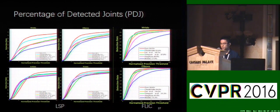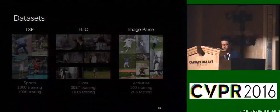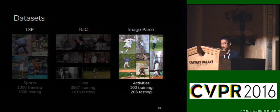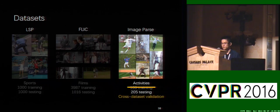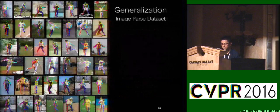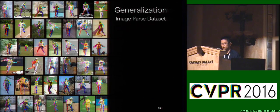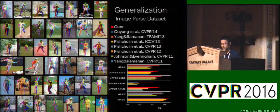We demonstrate the percentage of detected joints curve on both the LSP dataset and the FLIC dataset. The red curve denotes our method — again, the higher the better. To demonstrate the generalization ability, we directly use the full body model trained on the LSP dataset to predict the poses on the 205 test images of another dataset, the Image Parse dataset. The visualized results are pretty satisfactory, and the PCP results also outperform previous methods, some of which are trained directly on this dataset.